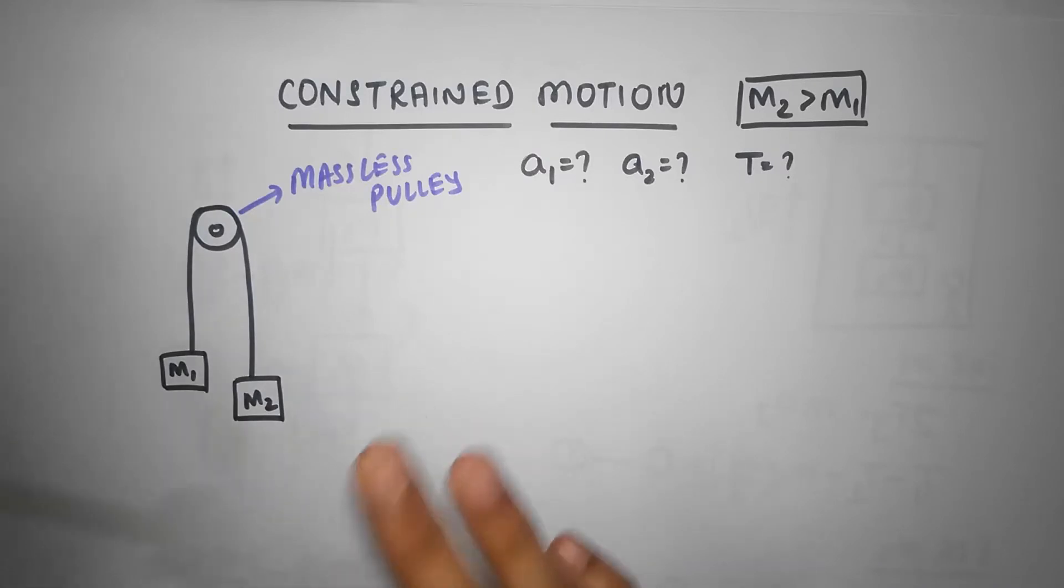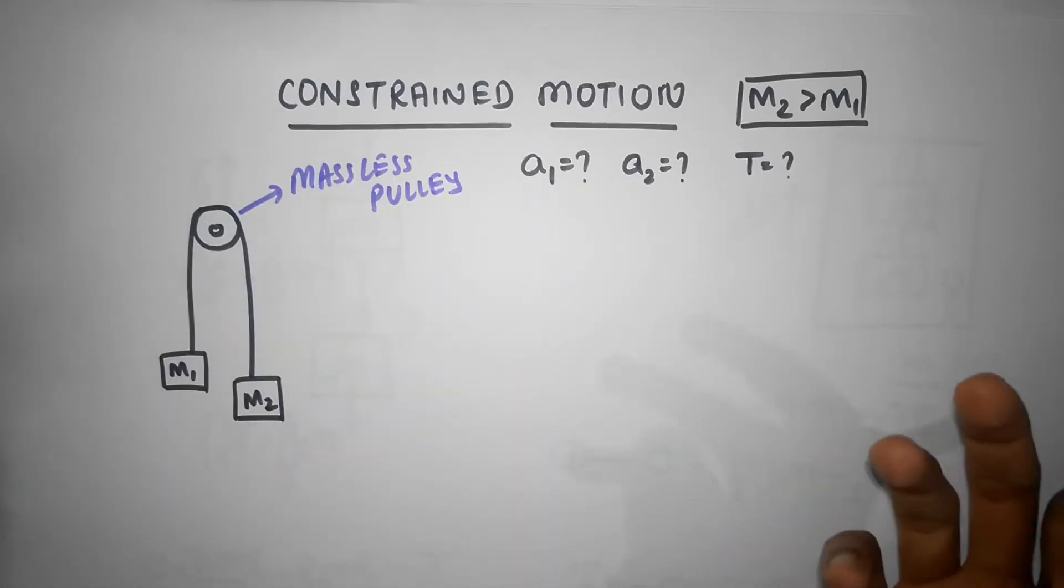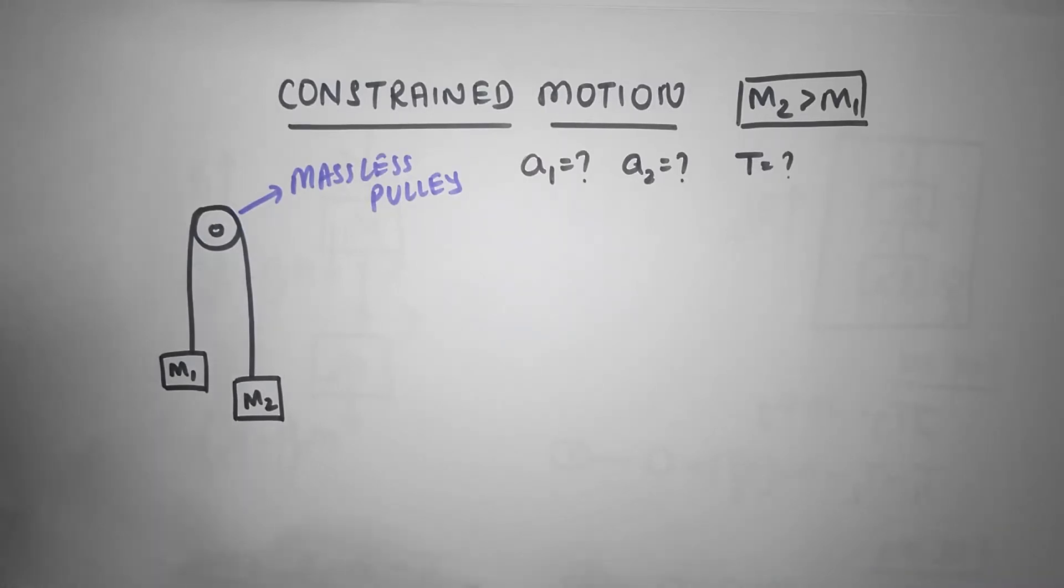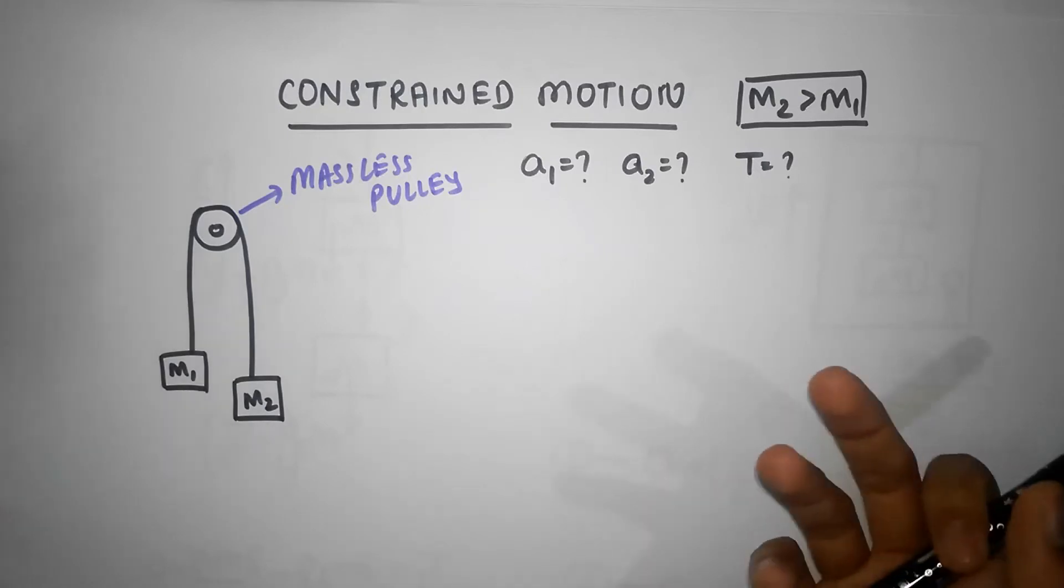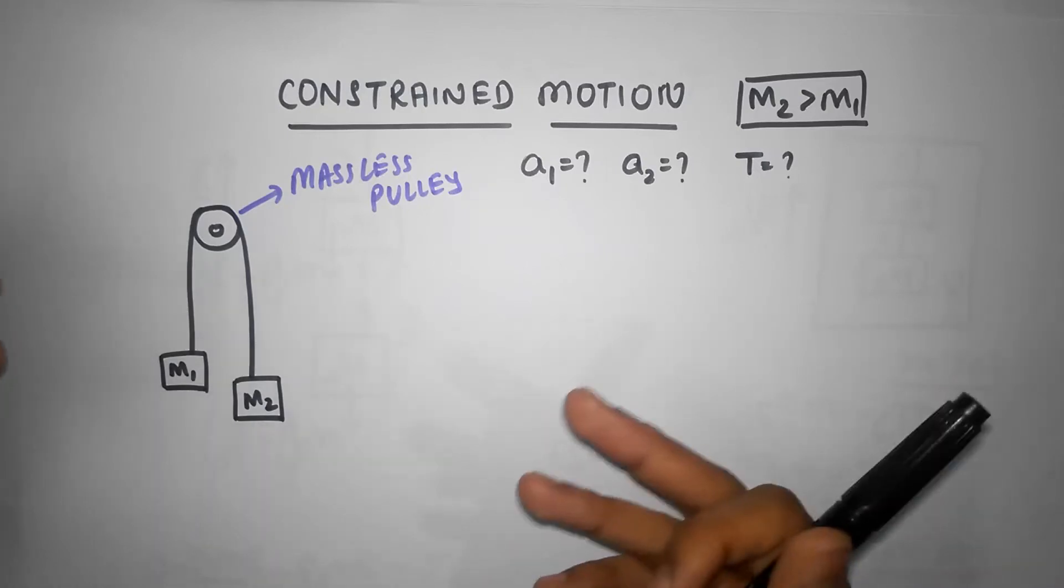But in general that may not be the case. In general it could be very difficult to predict the acceleration. So you know what I'm going to do? I'm going to treat this like a general case. I'm going to say look, I don't really know what direction the acceleration is. My brain can't handle that much information just like that. Well, we can just assume.